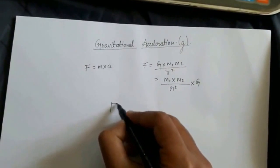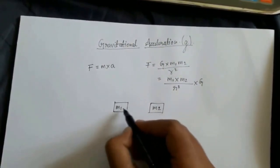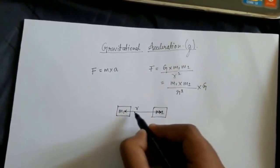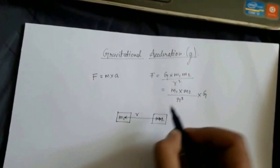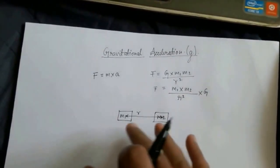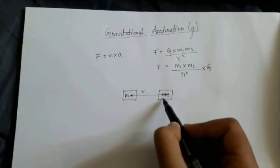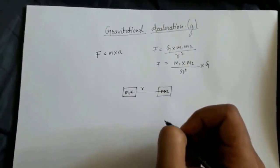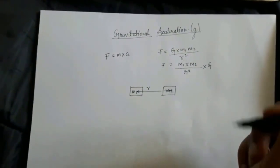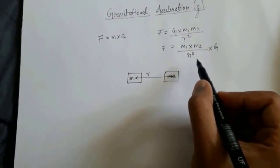Consider two bodies — this one is of mass M₁ and this one is of mass M₂. R is the center-to-center distance between them. The net force between these two bodies is given by that equation. This body is pulling this body towards it, and this body is pulling this body towards it. Every single body in the universe exerts a force on every other body, and that force is inversely proportional to the square of the distance between them.